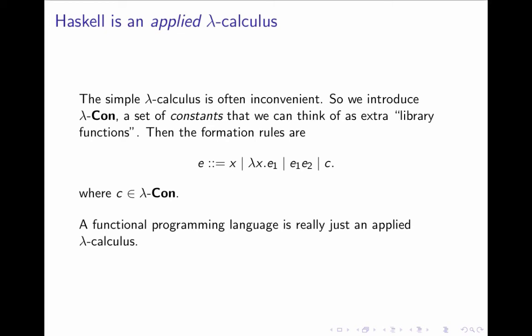Haskell is simply a version of the lambda calculus with a very large set of constants. A functional programming language like Haskell, or Scheme, or what have you, is really just an applied lambda calculus with a large set of constants.